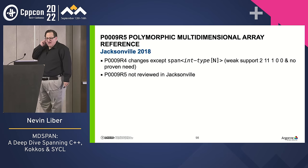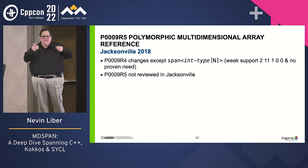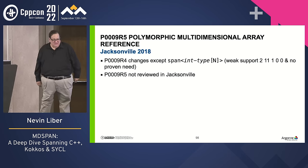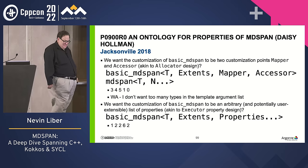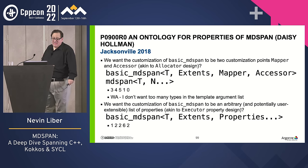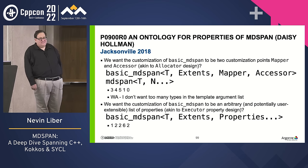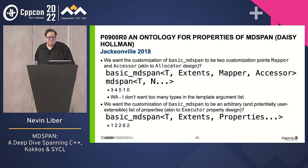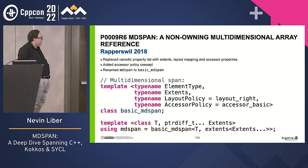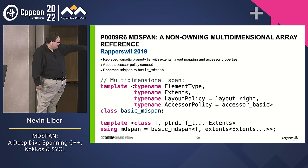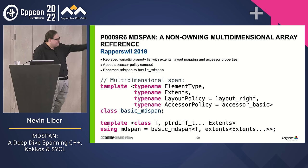R5 had changes to extents, and the attempt to index with a span was dropped — no practical guidance for it. R5 was not reviewed in Jacksonville, however, because Daisy wrote a paper about properties. Polls were taken: do you want the customization of basic_mdspan with mapper and accessor? Yes, though some were against having too many types in the type list. Ultimately, do we want properties? Unclear. So at this point we have basic_mdspan and then mdspan as the common-case shortcut. Extents are signed again — we go through this a lot. But it's starting to look like the final version.